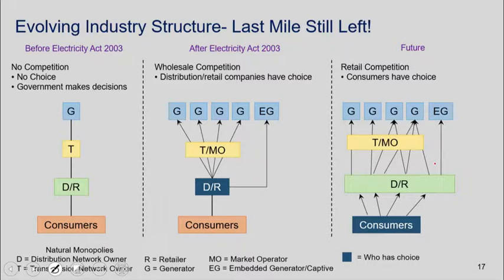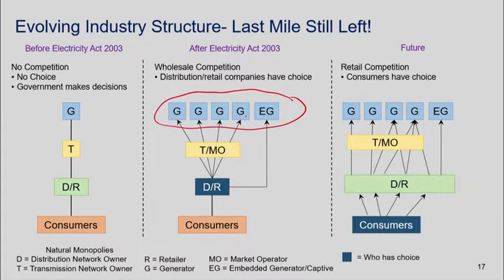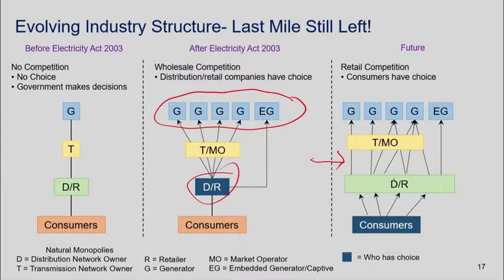After the Electricity Act of 2003 and after we brought in the private sector via PPP projects, we noticed that competition has been brought into power generation — now done by both the public and private sectors. In some sense the only choice currently available is to the distribution and retail companies, because they have a choice of who to buy from. We are now in transition to a third phase where we will also get competition in distribution.